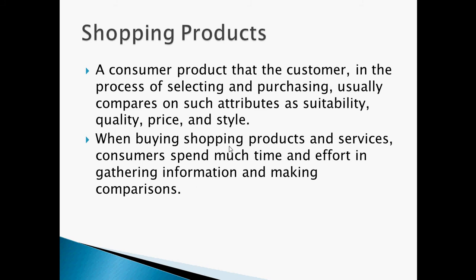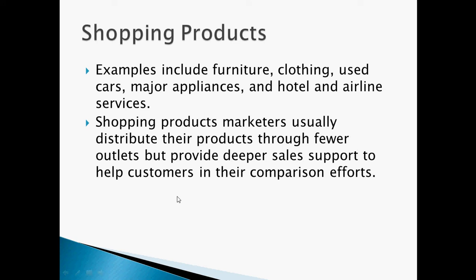A shopping product is a consumer product that the customer, in the process of selecting and purchasing, usually compares on such attributes as suitability, quality, price, and style. When buying shopping products, consumers spend much time and effort in gathering information and making comparisons. Examples include furniture, clothing, used cars, major appliances, and hotel and airline services.